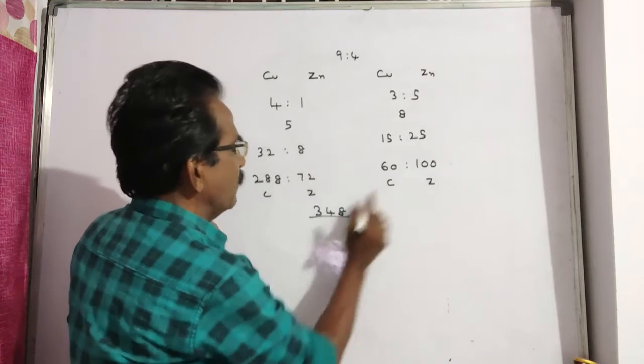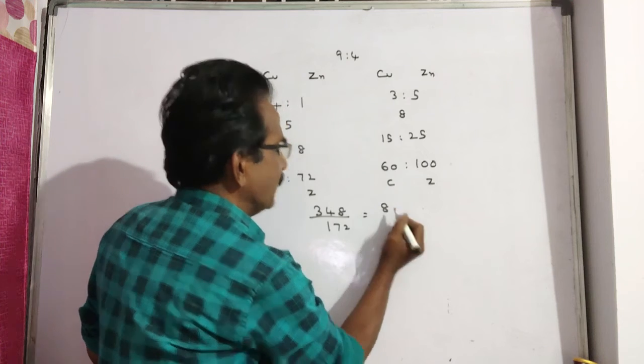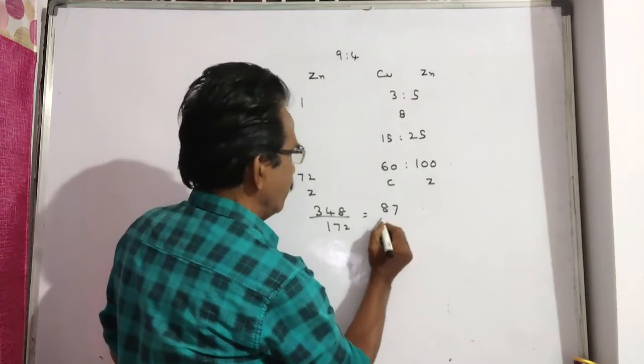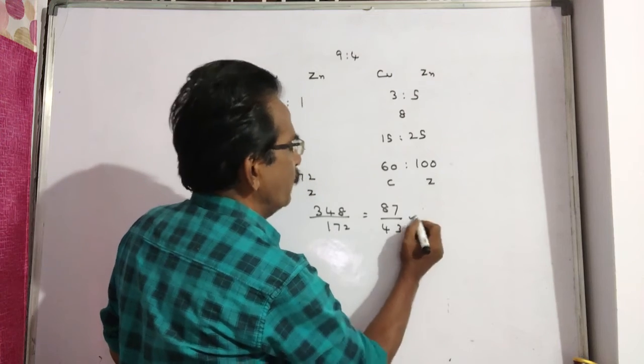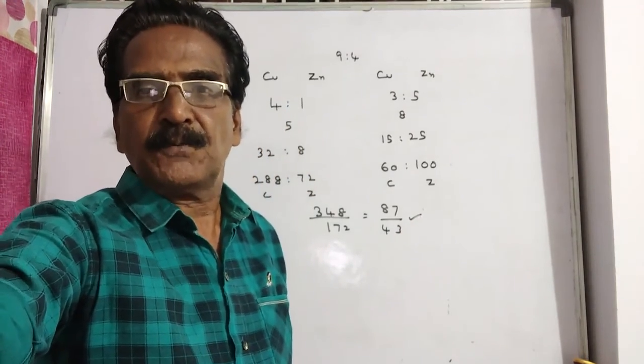Zinc plus zinc: 172. Now dividing by 4: 348 divided by 4 is 87, 172 divided by 4 is 43. So 87 is to 43 is your answer, friends. Thank you.